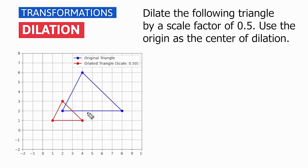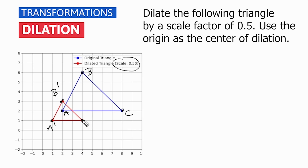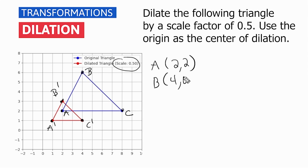All right, as you can see, this triangle here was dilated by a scale factor of 0.5 or 1 half. Now let's take a look at the corresponding vertices. Let us call this point A, this is our original point B, and let us call this point C. This will be our new point A prime, B prime, and C prime. If we take a look at the original coordinates: A is located at positive 2, positive 2; B is located at positive 4, positive 6; and C is located at positive 8, positive 2.